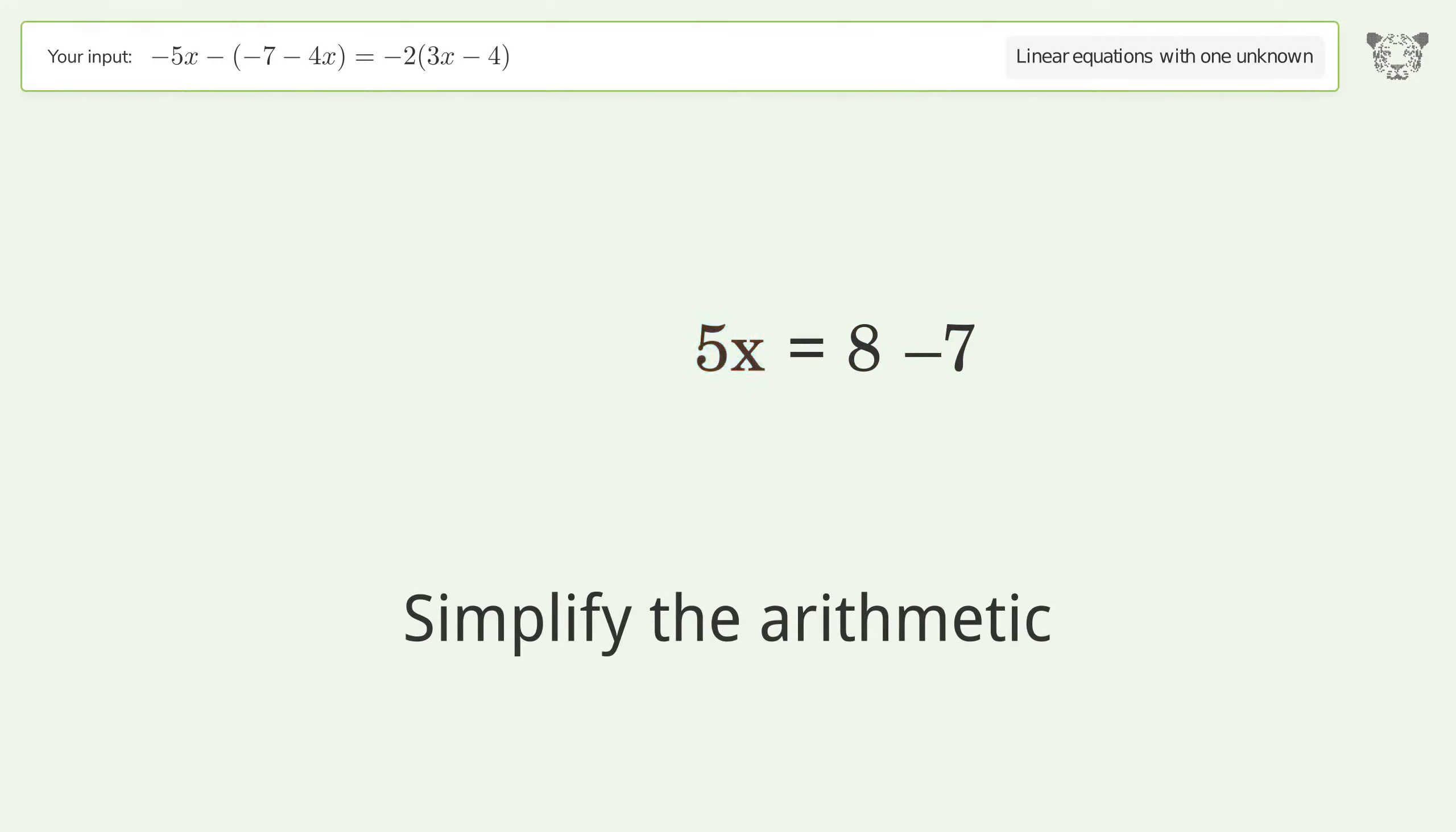Group like terms and isolate the x. Divide both sides by 5 and simplify the fraction.